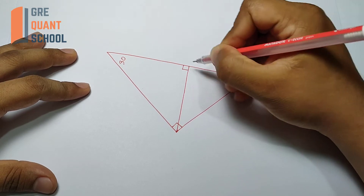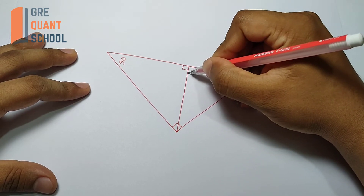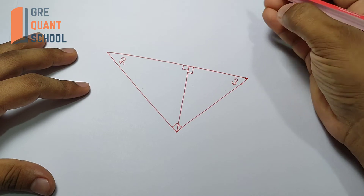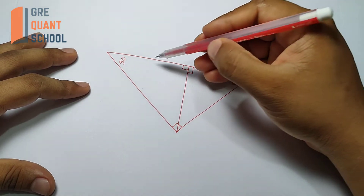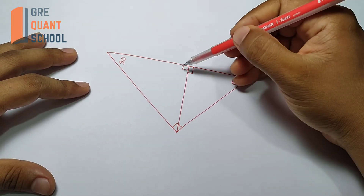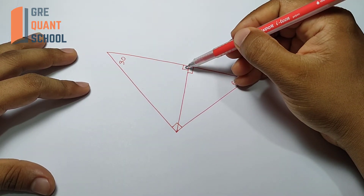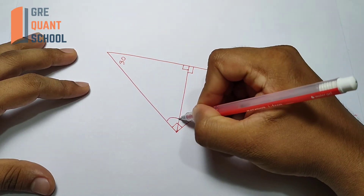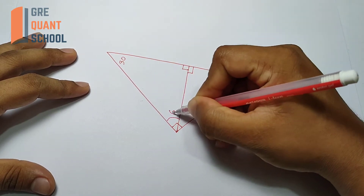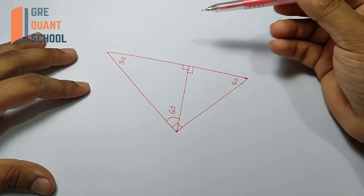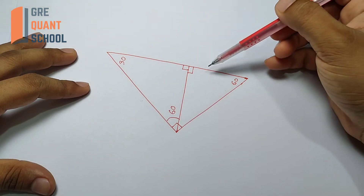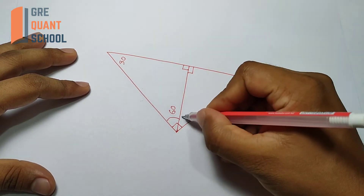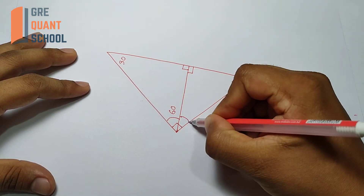If I describe the front sector, the right triangle has angles. Drawing the right triangle: the triangle has angles 90, 30, and 60 — the rectangle is definitely 60.